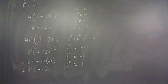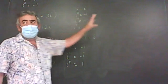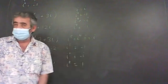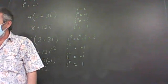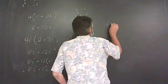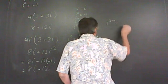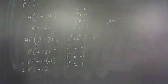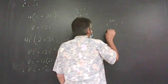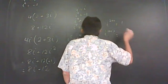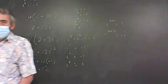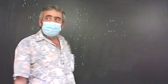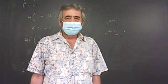No matter what the exponent is, you always end up with one of these four answers: i, negative 1, negative i, or 1. So even i to the power 200 gives 1, and i to the power 1003 gives negative i. All that's necessary is to figure out which one it is quickly. There are two ways to do this.